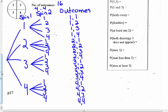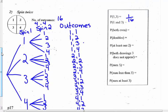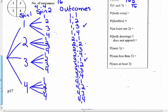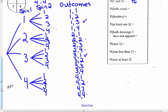Now answering the probability questions. What's the probability of getting a one and then a three? There's one out of 16 — one-sixteenth. The probability of getting a one and three — meaning one-three or three-one, order doesn't matter — gives two out of 16. The probability that both are even: two-two, two-four, four-two, and four-four — four out of 16. The probability of doubles: one-one, two-two, three-three, four-four — also four out of 16.